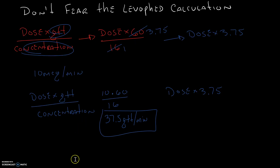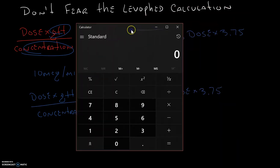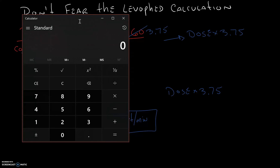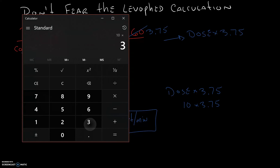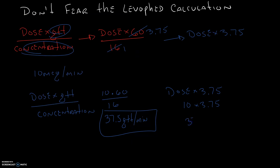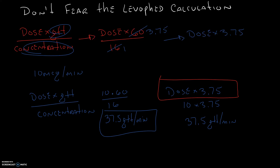And let's do the new way. We'll bring the calculator back up again. We'll do the dose, which is 10, times 3.75. 10 times 3.75 equals the same number: 37.5 drops per minute. So what I want you to get out of this is that your new calculation for Levofed is the desired dose times 3.75. Hope this works for you. If you have any comments, please put them down below and we will see you down the road.